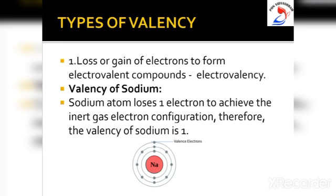For example, consider sodium. The atomic number of sodium is 11 and its electronic configuration is 2, 8, 1. It has one electron in its outermost shell. Sodium can lose this electron to form a sodium ion Na⁺, achieving an inert gas electronic arrangement of 2, 8. Since sodium loses one electron to achieve this configuration, the electrovalency of sodium is 1 (or +1). Similarly, potassium has atomic number 19 and valency 1, and lithium has atomic number 3 and valency 1.